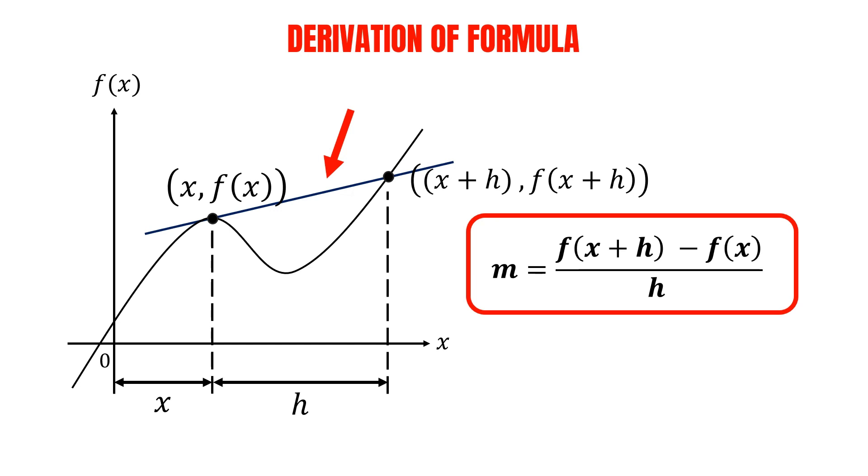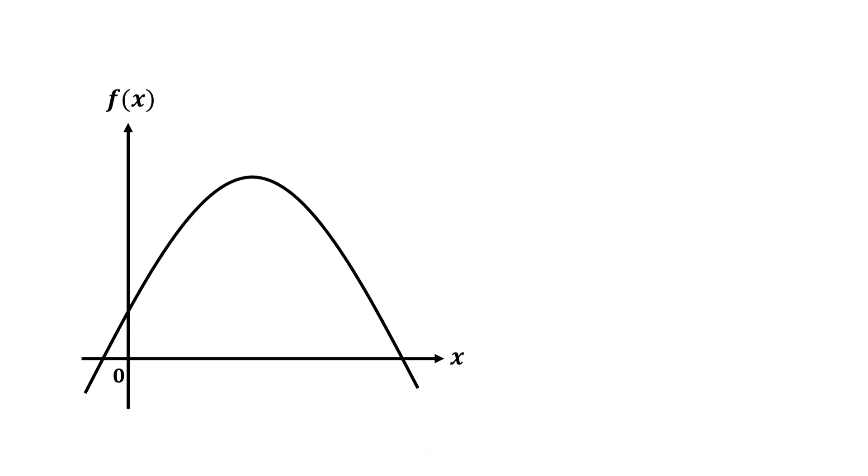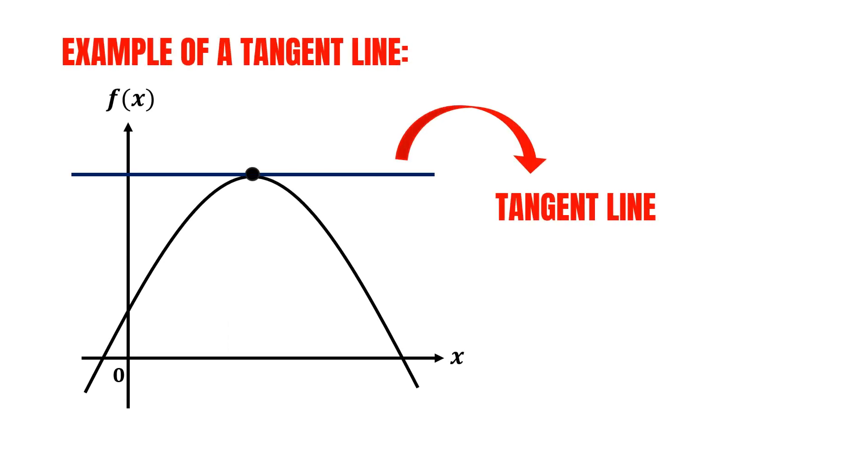However, when finding the derivative of a function, we actually care about the gradient of the tangent line. For the tangent line, just like in this example, it is known as a straight line that intersects a curve at only one point.